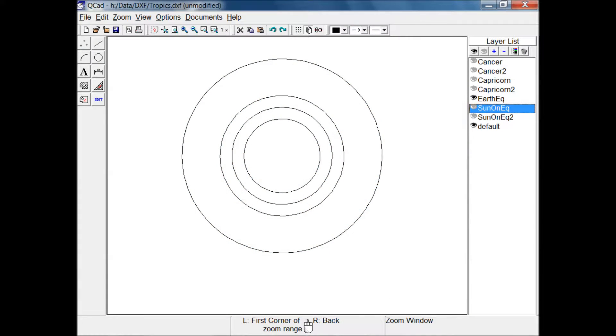I want to take a look at how many hours of sunlight the equator is going to get using this model throughout the year. This sketch shows the Earth, the equator, and the tropics of Cancer and Capricorn.